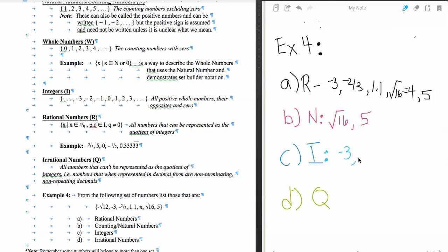Square root of 16, yes. If it was a natural number, it is also an integer. So 4 and square root of 16 and 5 are both integers.